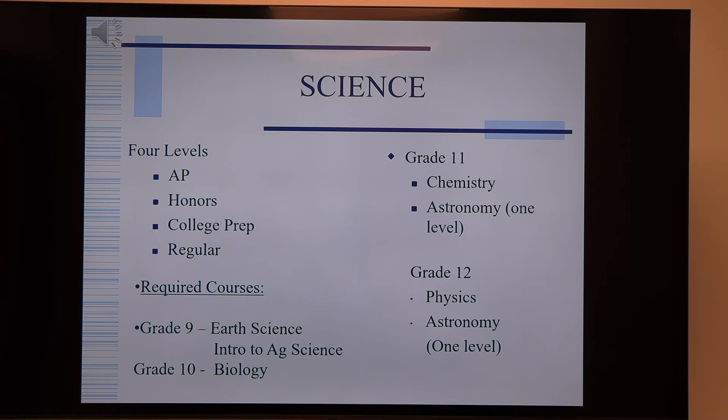Science — we have different levels: AP, honors, college prep, and regular. What ninth graders need to decide is their choice of either Earth Science or Intro to Ag Science. Earth Science is in the 4,000s; Intro to Ag Science is in the 8,000s. There is only one level of Ag Science, so students of a variety of ability levels can take it and the teacher works with different students' levels.